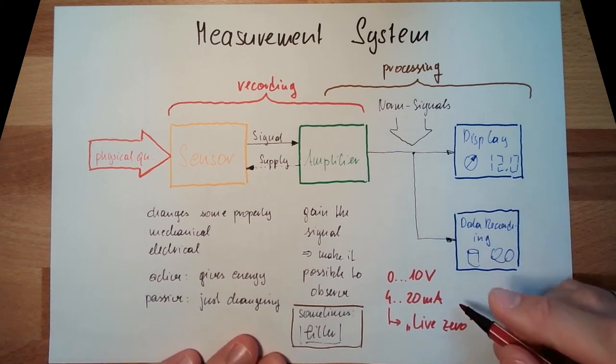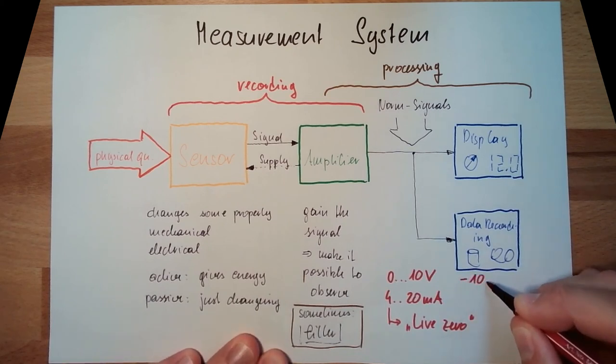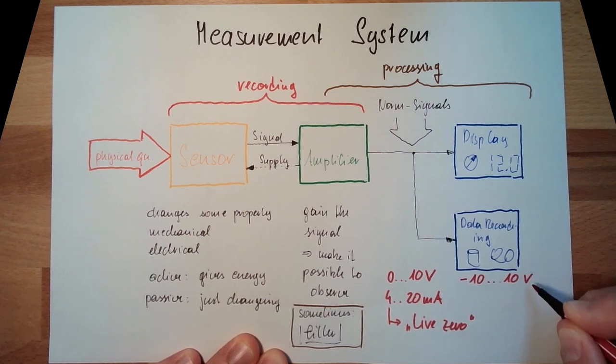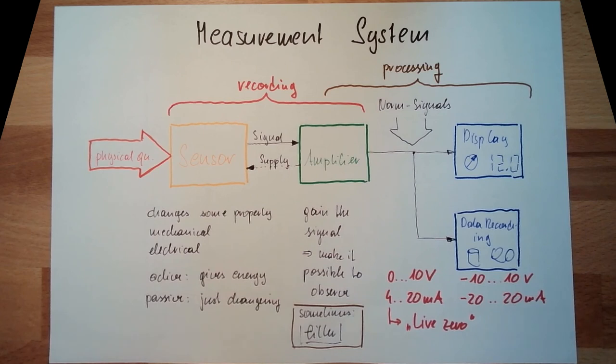Then there is a bipolar signal. Minus 10 to 10 volt and minus 20 to 20 milliamps. This is also a very common signal. Which of them to choose and what are the advantages and disadvantages we will cover in the upcoming series of this video, in the upcoming videos.